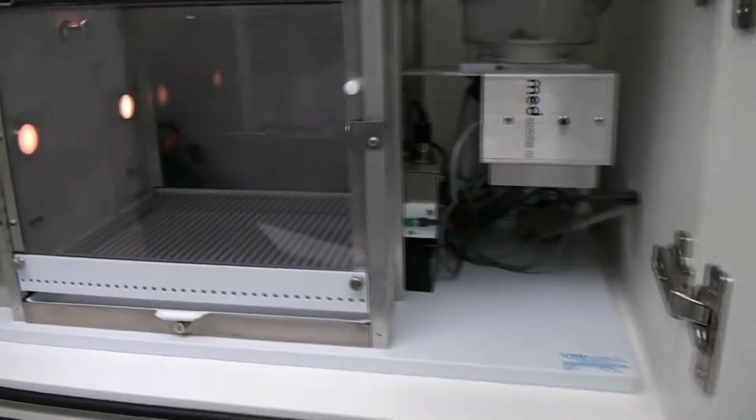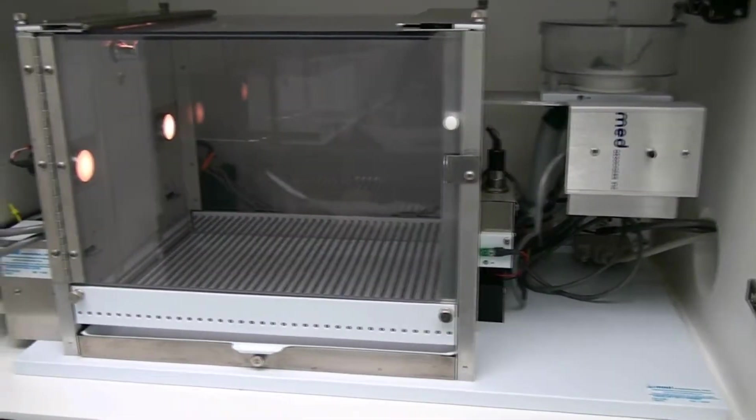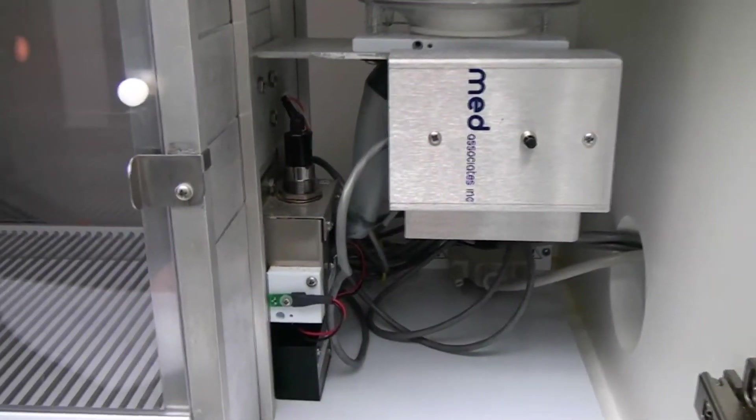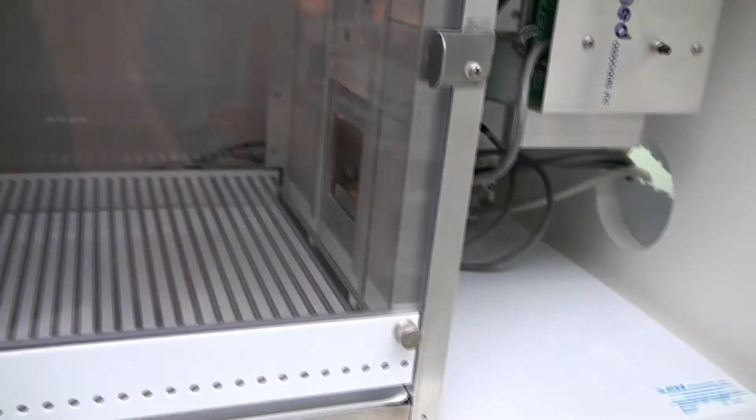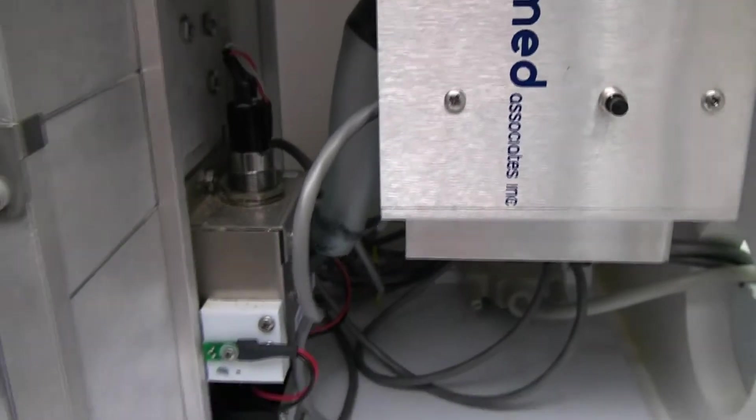As we move up here, we're going to just go through what's included inside the chamber here. As you can see, it does have the pellet feeder, the pellet dispenser in there. And it also has the head entry that's mounted right up on top there, so that you have that input.